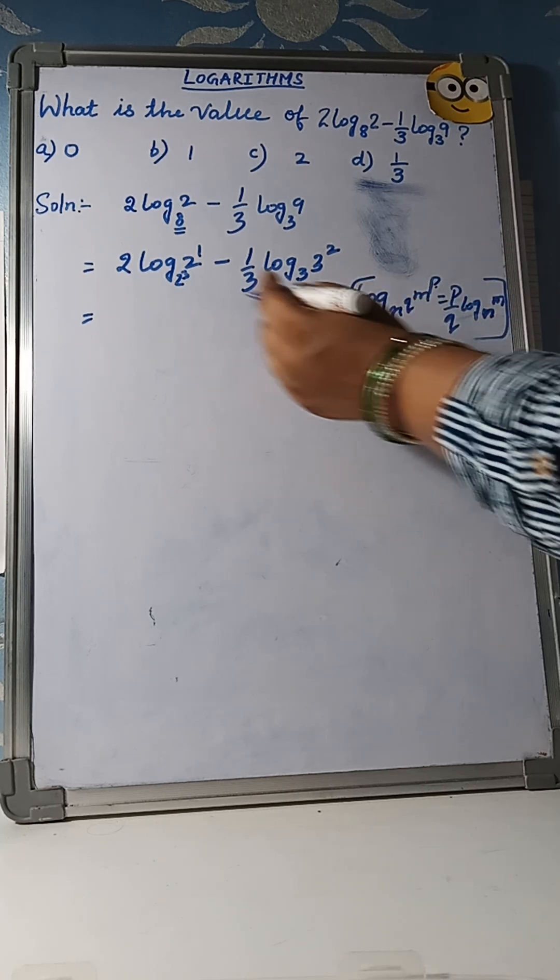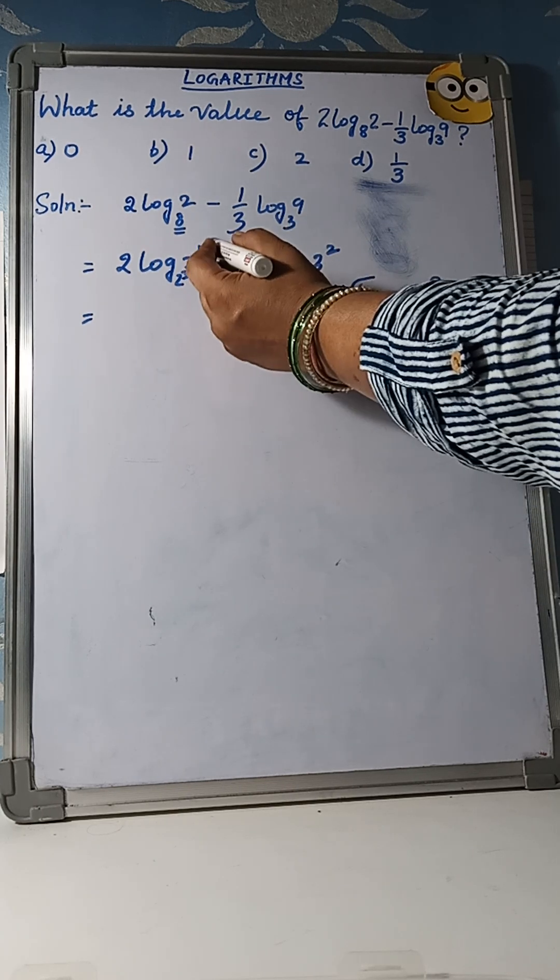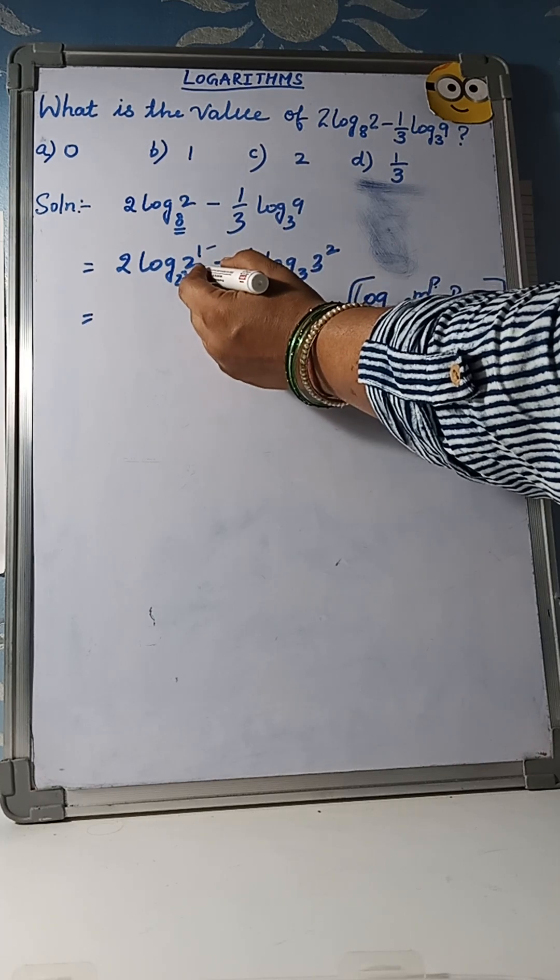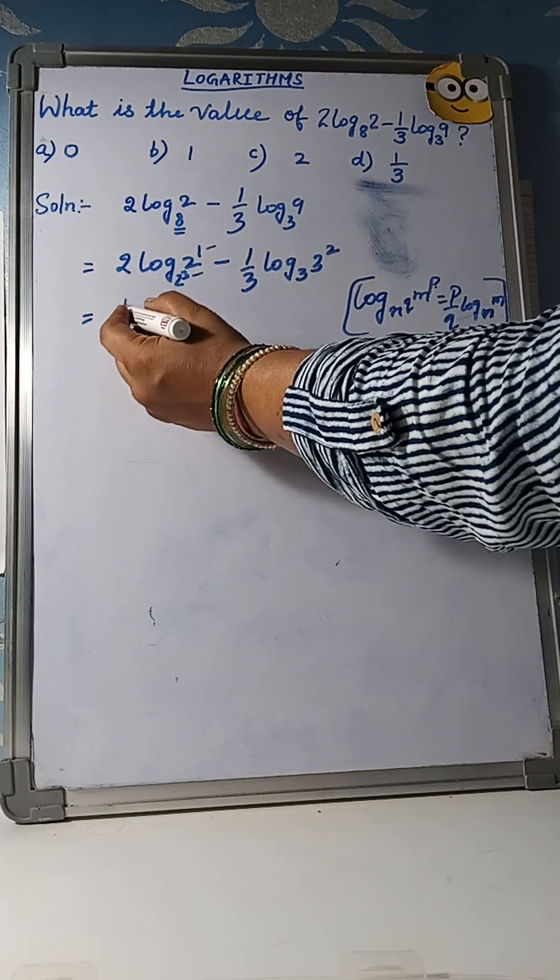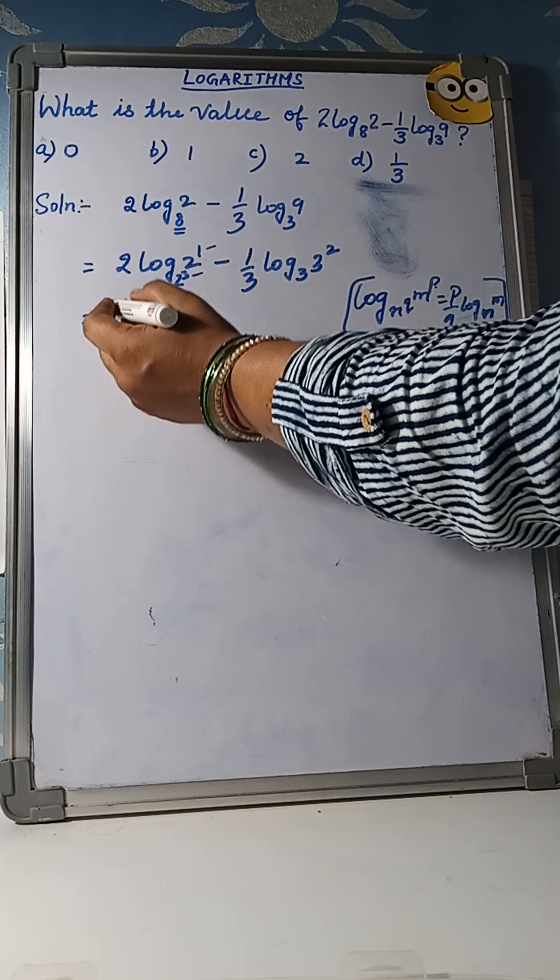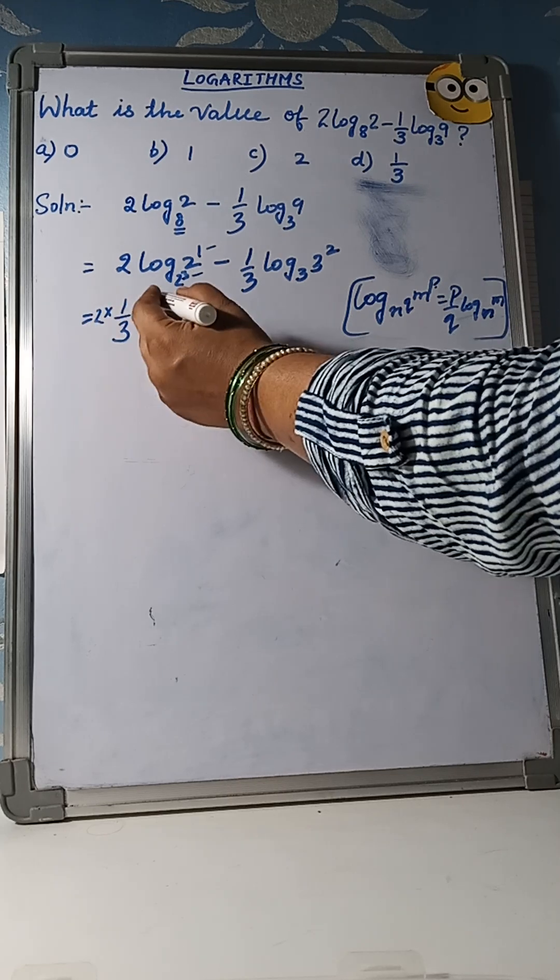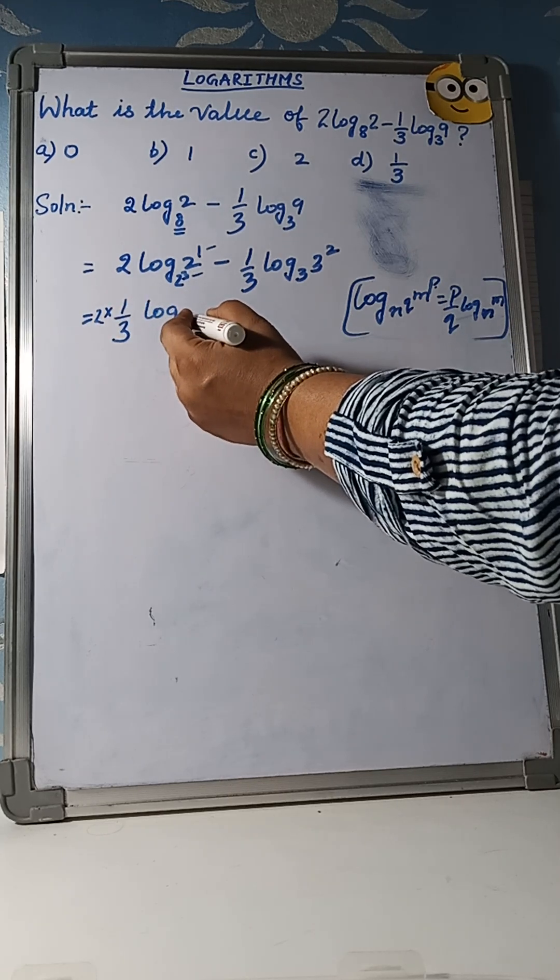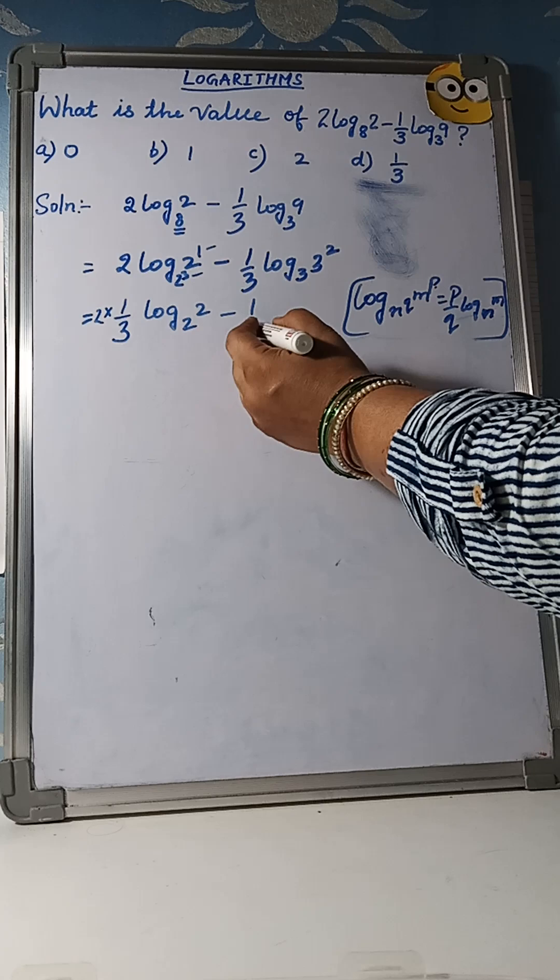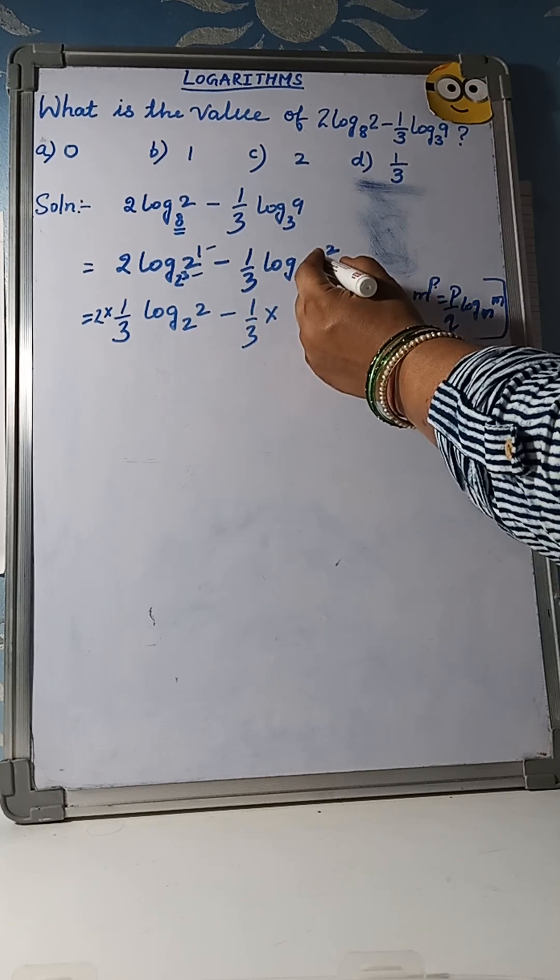Using this property, we can change this. This one is P and this one is Q. So, 1/3 and this 2 log 2, 2 minus 1/3 into here 1.